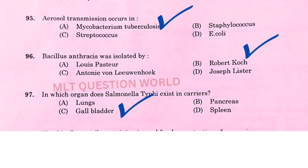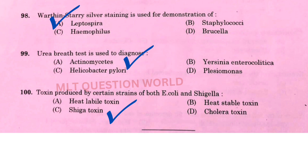Next one: Aerosol transmission occurs in — the right answer is option A, Mycobacterium tuberculosis. Next one: Bacillus anthracis was isolated by — the right answer is option B, Robert Koch. Next one: In which organ does Salmonella typhi exist in carriers? The right answer is option C, gallbladder. Next one: Warthin-Starry silver staining is used for the demonstration of — the right answer is option A, Leptospira.